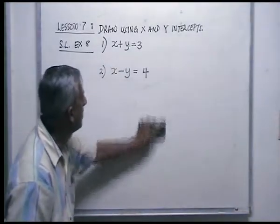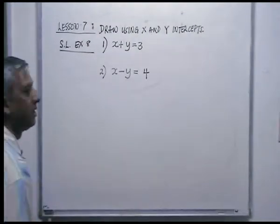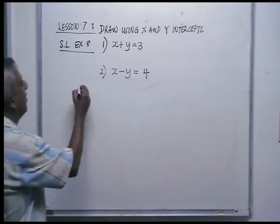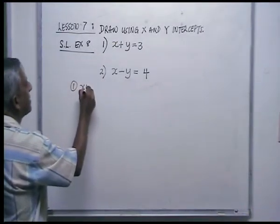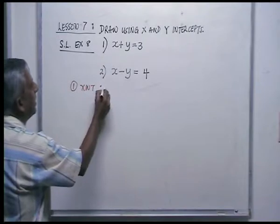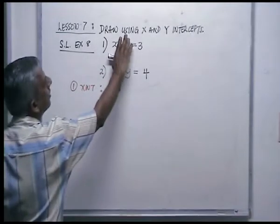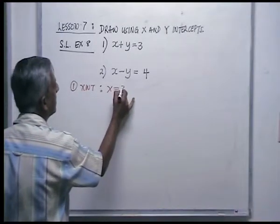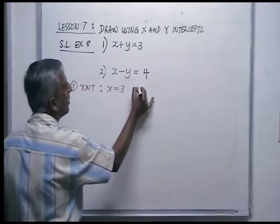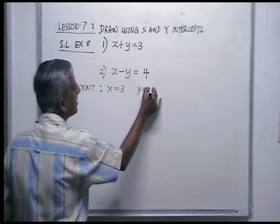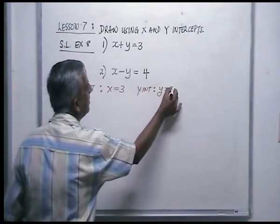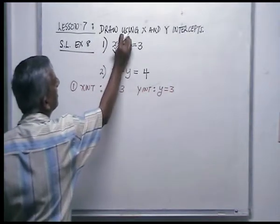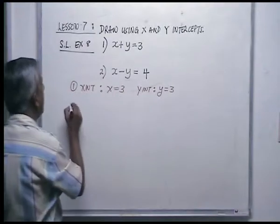I'm going to do numbers 1 and 2 on one graph. For number 1, x plus y equals 3: the x-intercept is x equals 3 (put y equal to 0), and the y-intercept is y equals 3 (put x equal to 0).